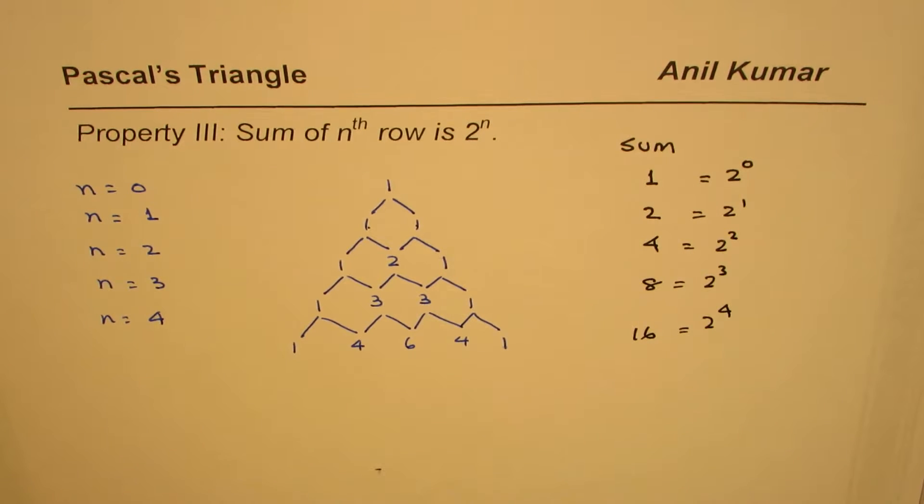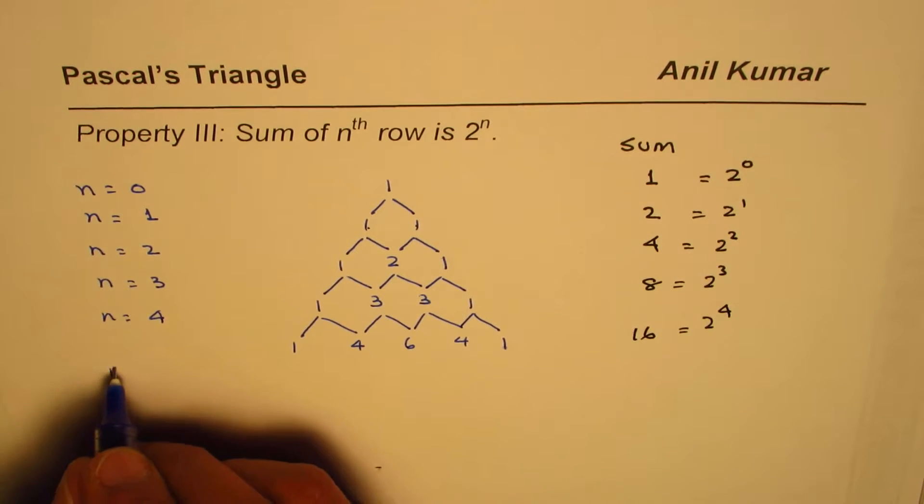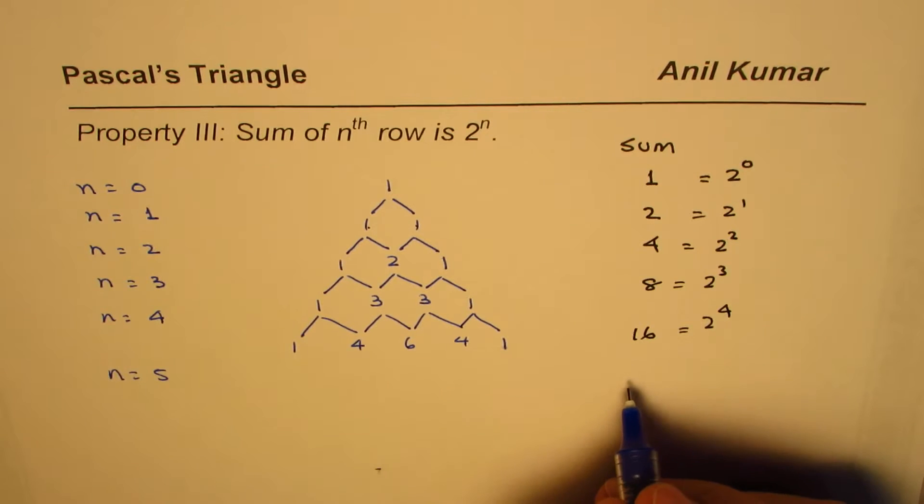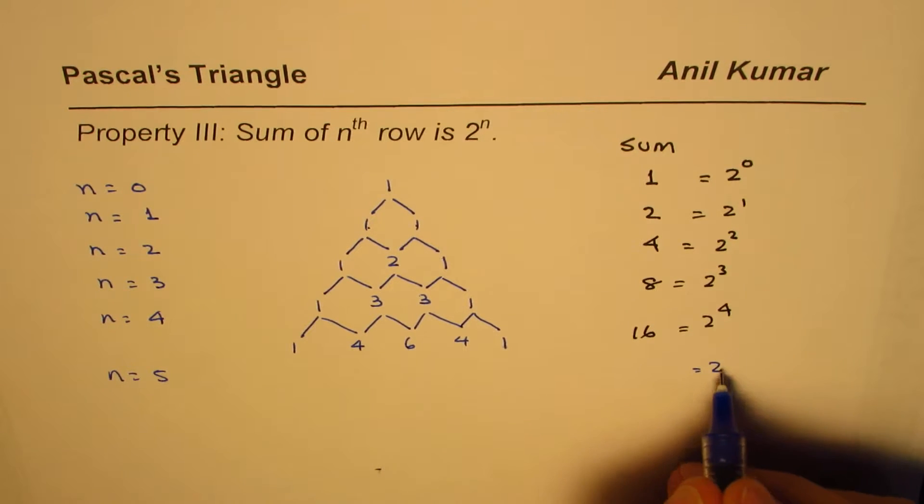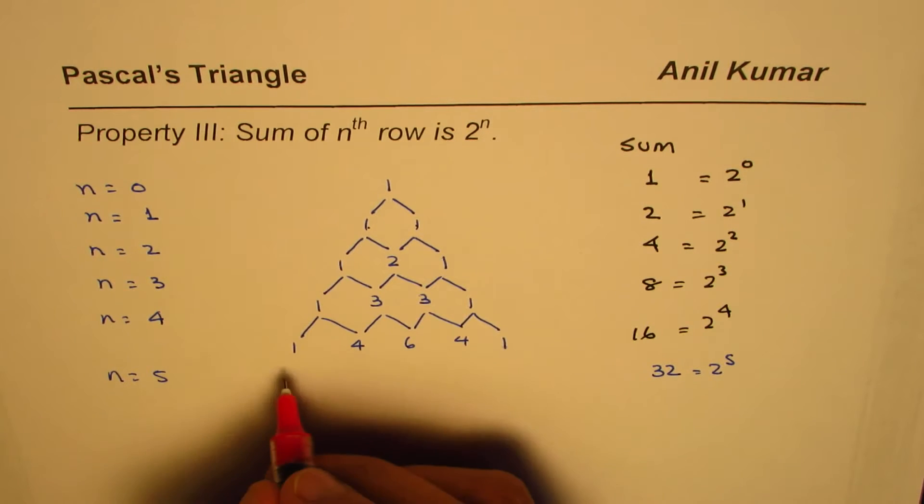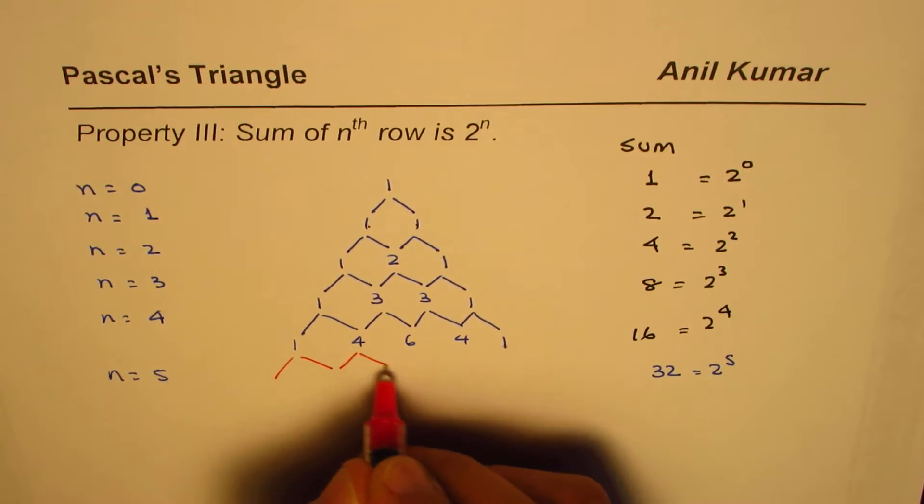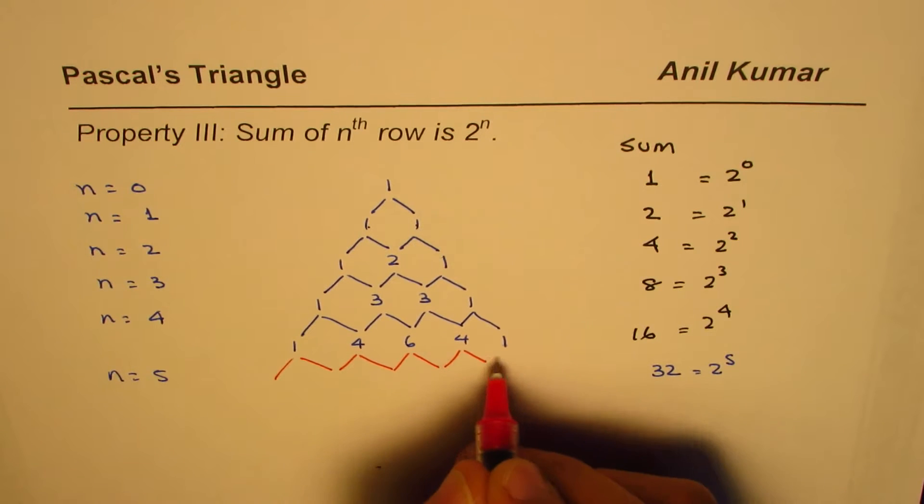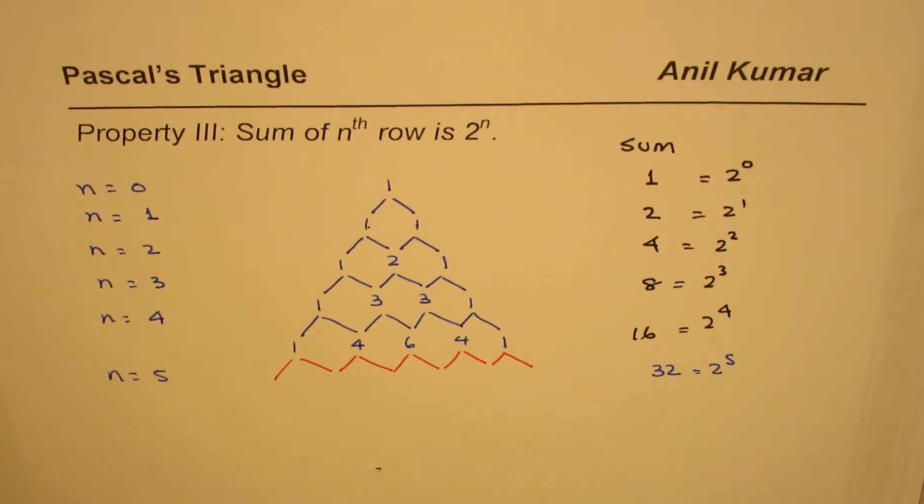So for n equals 5, the result should be 2 to the power of 5 or 32. So you can just verify it. Let's verify this. Let's add these terms together and see if this formula really works.